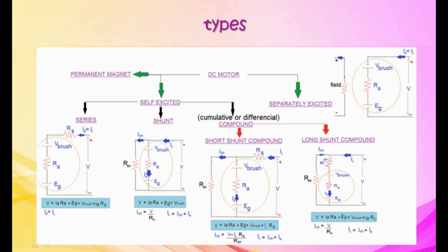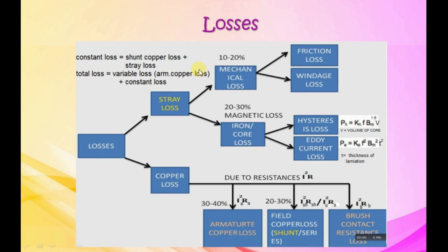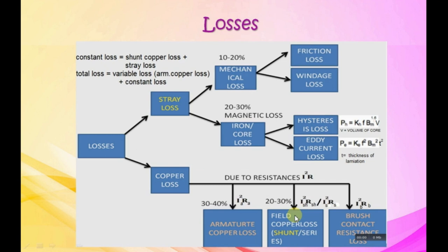Losses of DC machine are divided into copper losses and stray losses. Stray loss is further divided into iron losses and mechanical losses. Mechanical losses consist of friction loss and windage loss, totaling 10 to 20 percent of full-load losses. Iron loss (core loss) is 20 to 30 percent and is a magnetic loss, divided into hysteresis loss and eddy current loss. Copper losses are due to armature resistance, field resistance, or brush contact resistances.